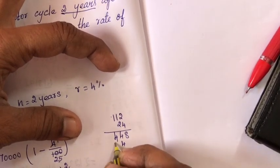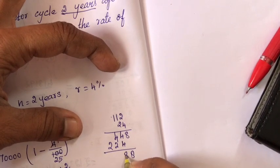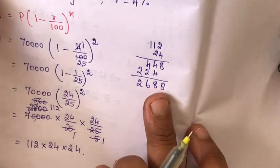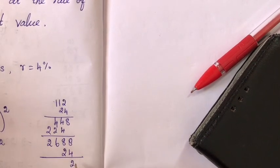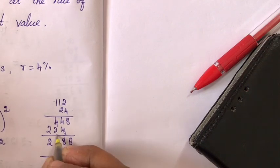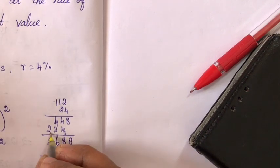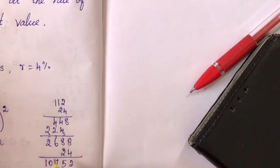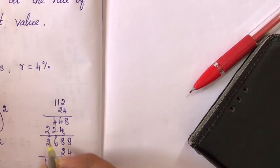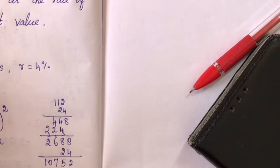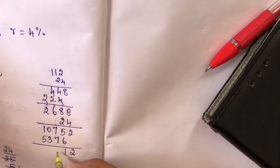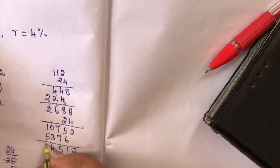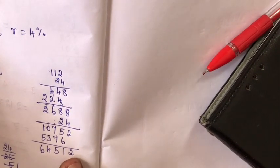Continuing the multiplication: 2 twos are 4, 2 one is 2, giving 2,688. Now 2,688 into 24: 8 fours are 32, carry 3; 8 fours are 32 plus 3 is 35; 6 fours are 24 plus 3 is 27; 2 fours are 8 plus 2 is 10; 8 twos are 16 plus 1 is 17; 6 twos are 12 plus 1 is 13; 2 twos are 4 plus 1 is 5. Combining: 6 plus 5 is 11, carry 1; 14 plus 1 is 15; 3 plus 1 is 4; 5 plus 1 is 6. Result: 64,512 rupees.